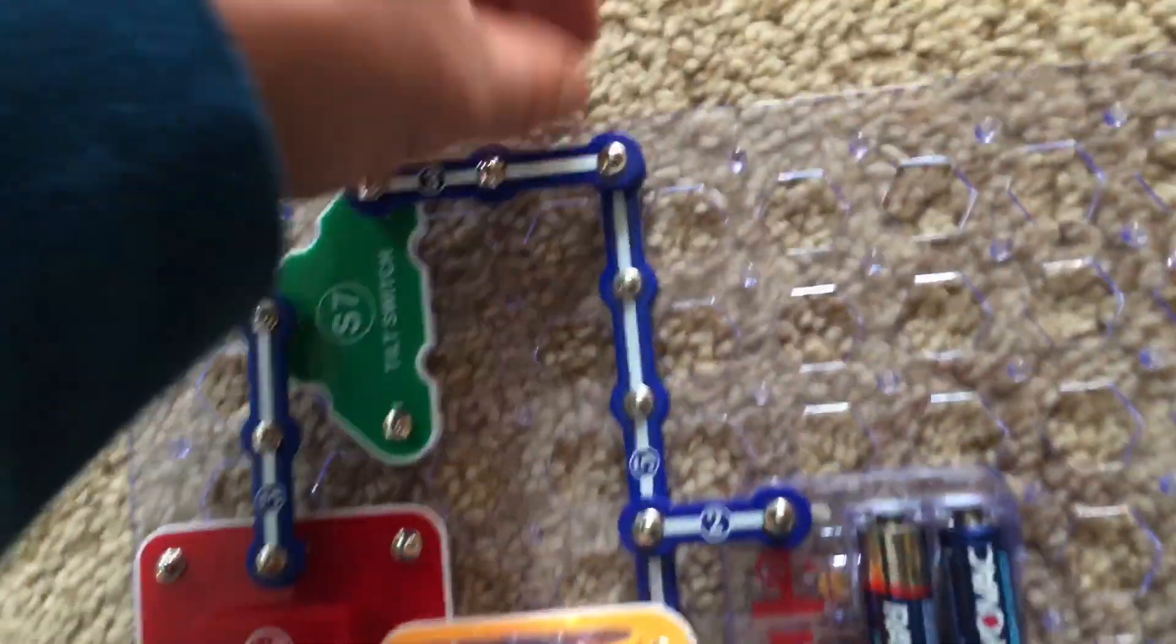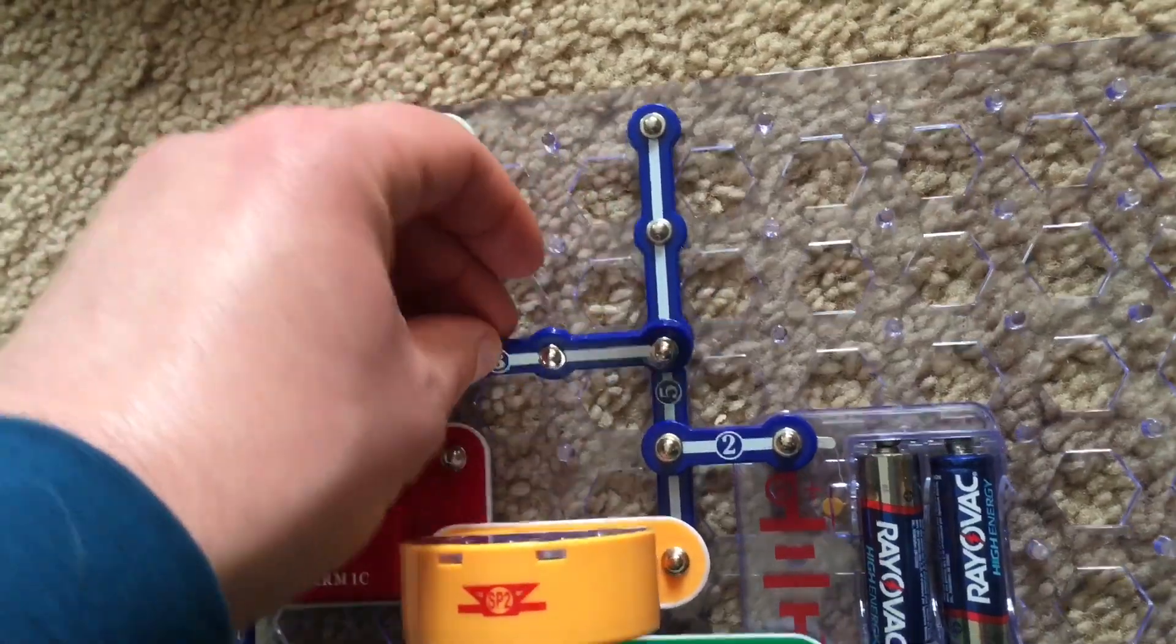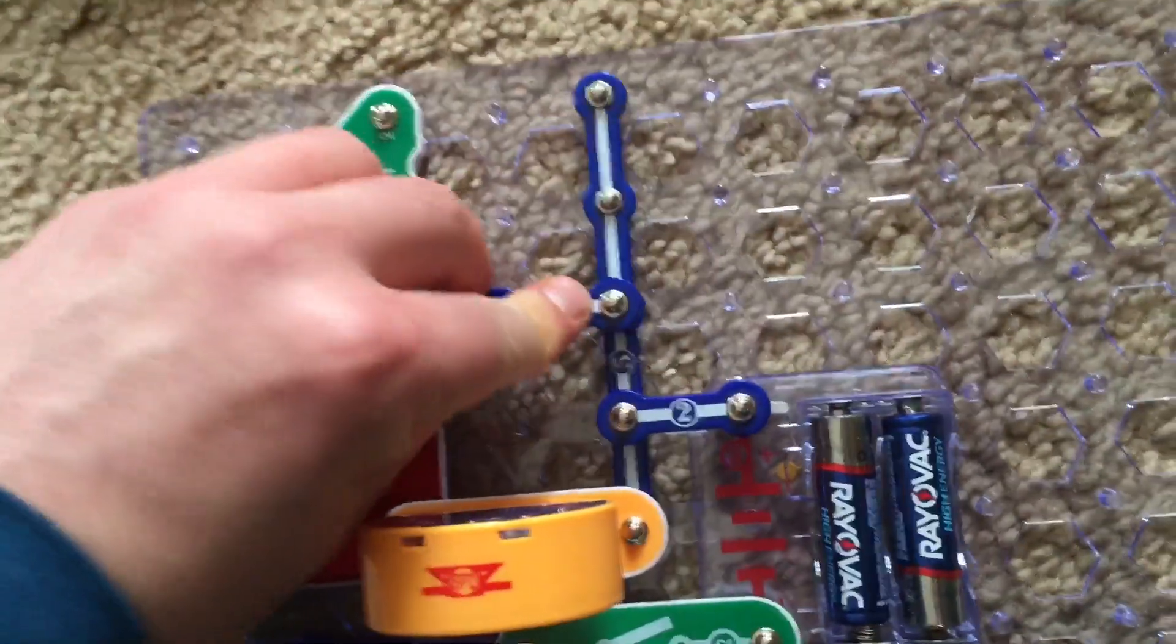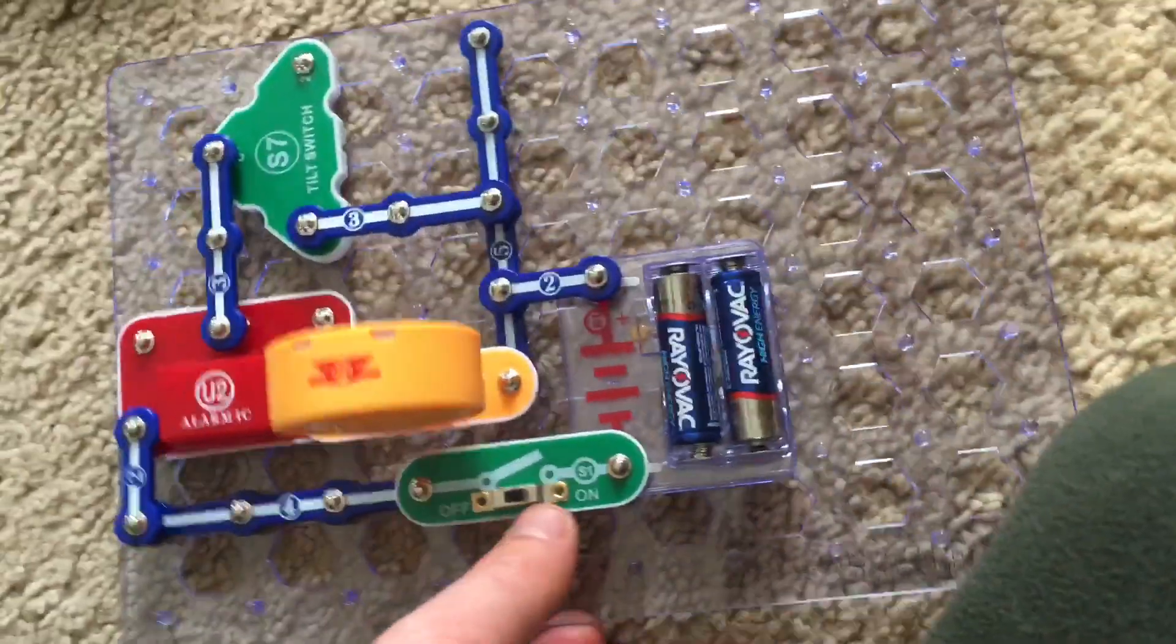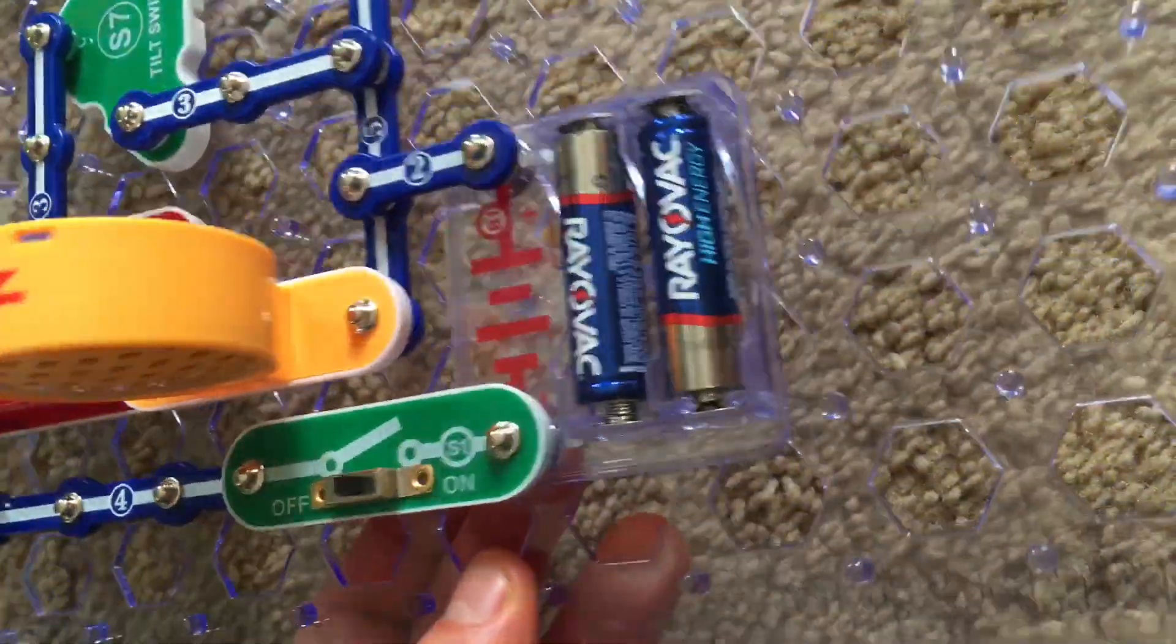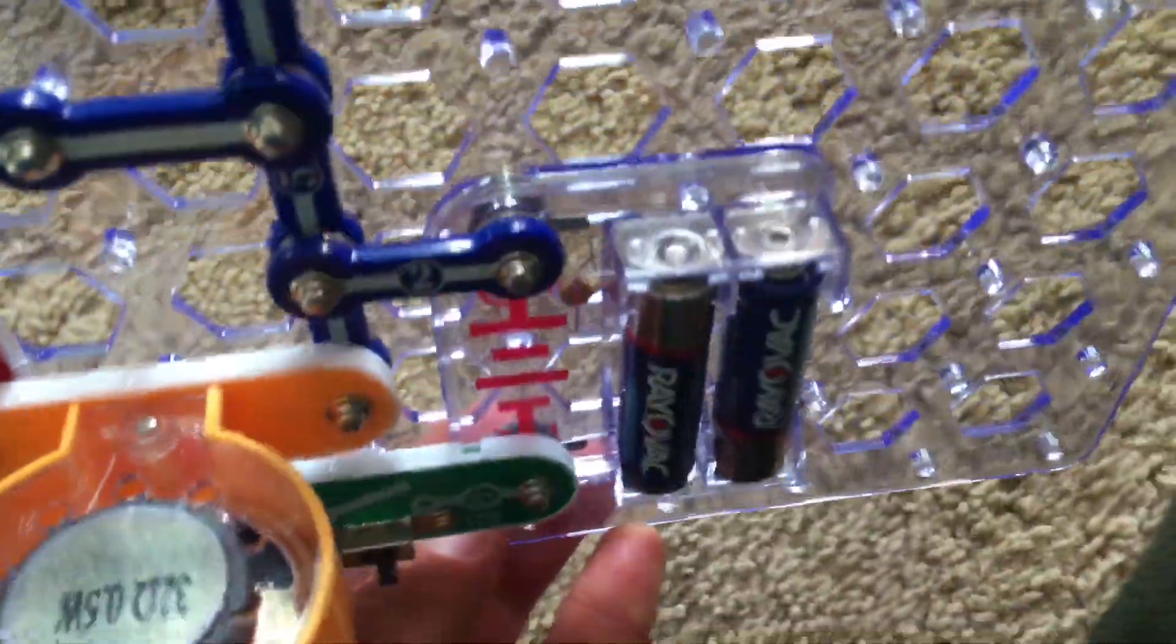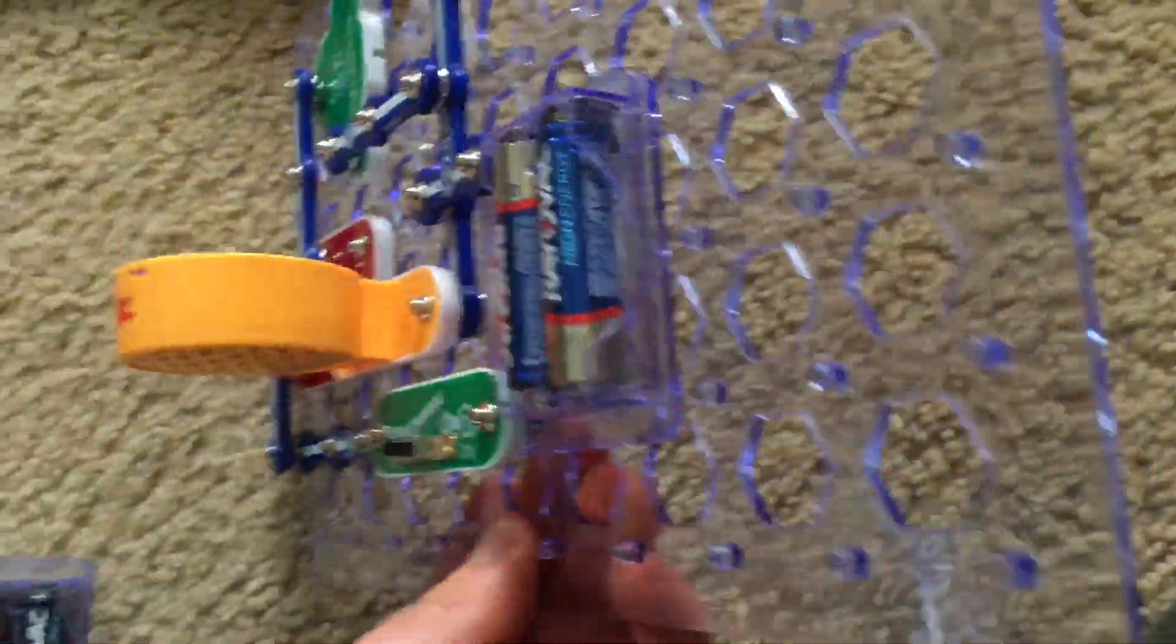Now for the second part of this project I'm going to move the three snap wire down here between points C and D and it will be sensitive to tilt in different directions than before.